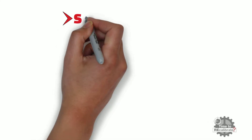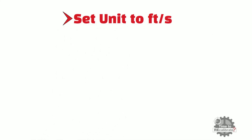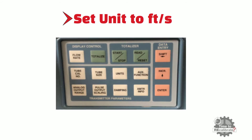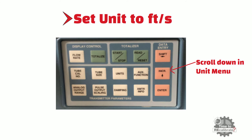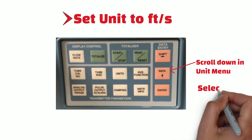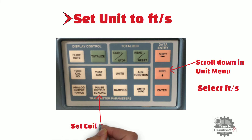Step 4: Set the unit to feet per second. Press the unit button to enter the unit menu, then press scroll down. All different types of flow measurement units can be found in this menu. Select feet per second and press enter to store this unit in the transmitter. Repeat the same steps to set the coil pulse mode to 5 Hz.